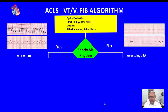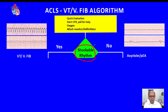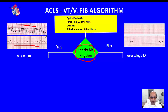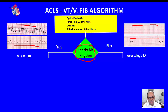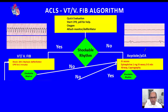Now you have an EKG monitor. The next question is: do we see a rhythm that is shockable or not shockable? This is a critical decision-making point. The shockable rhythms we will most often see in cardiac arrest are ventricular tachycardia or coarse/fine ventricular fibrillation. On the other side, asystole or pulseless electrical activity is represented by a fine straight line or an agonal rhythm.